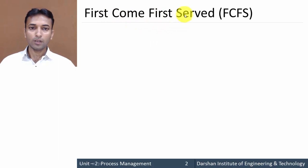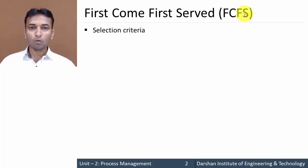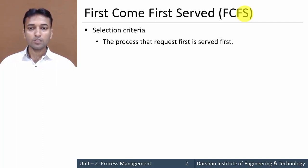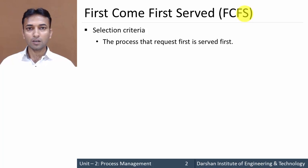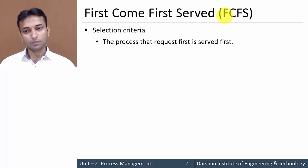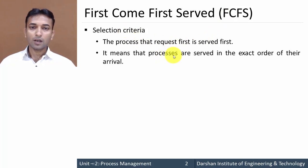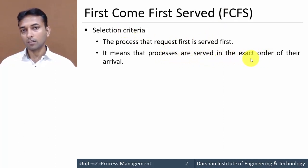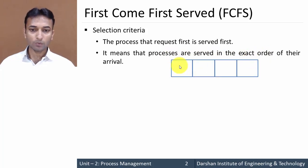First Come First Serve is also known as FCFS — F for First, C for Come, F for First, S for Serve. The selection criteria: the process that arrives first is served first. We can also say that the process that arrives first will execute first, meaning processes are served in the exact order of arrival.